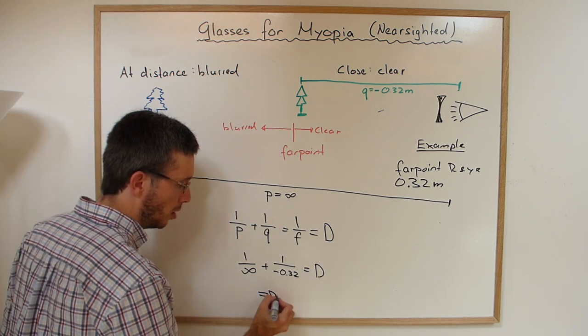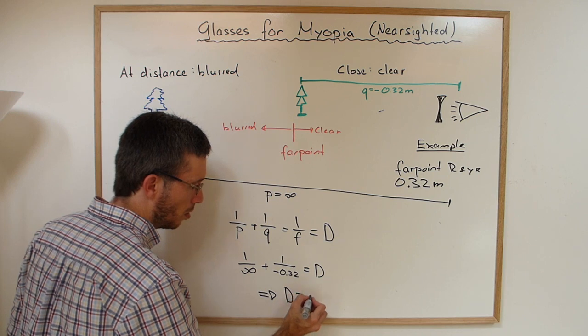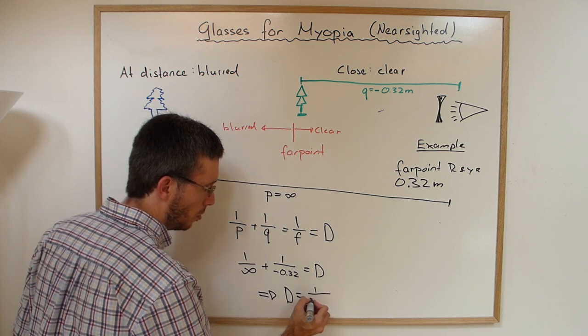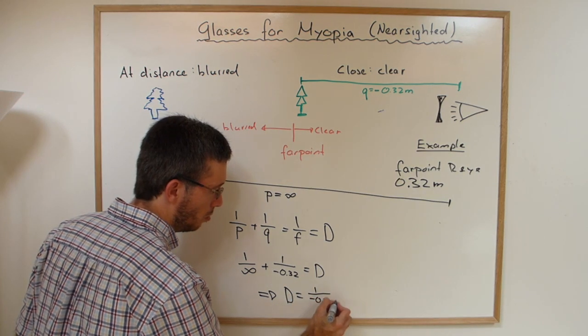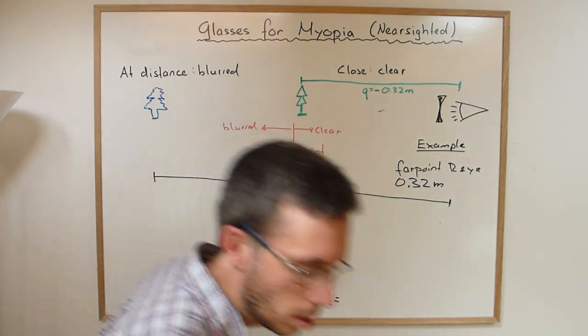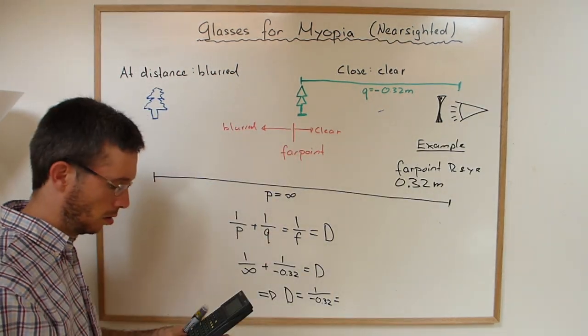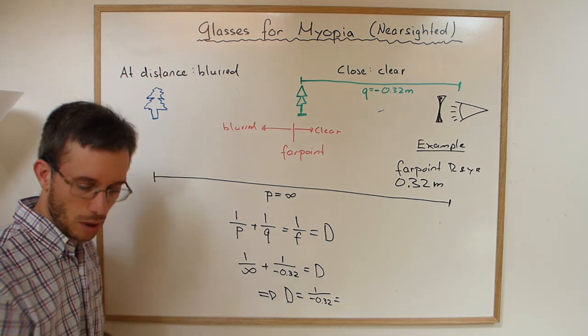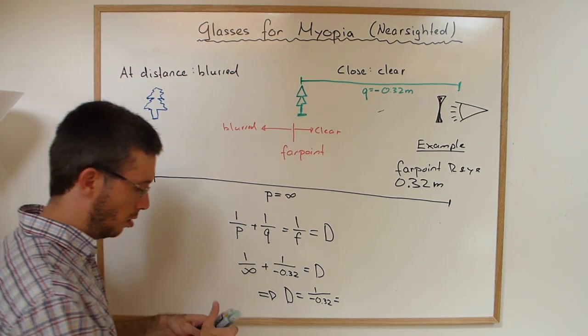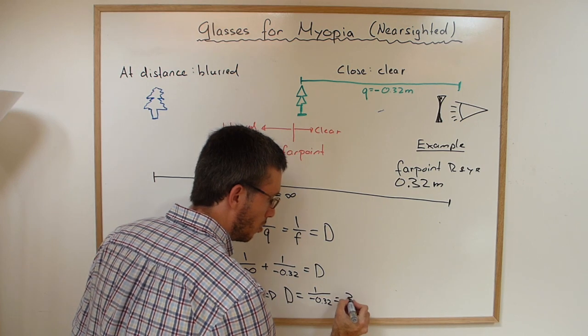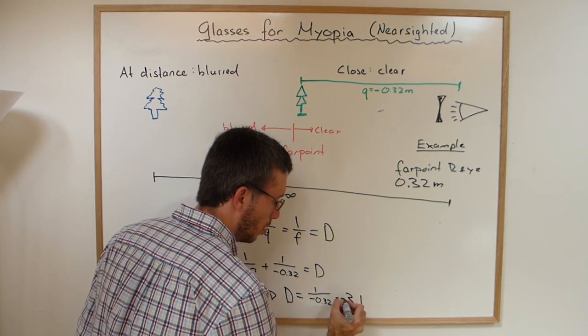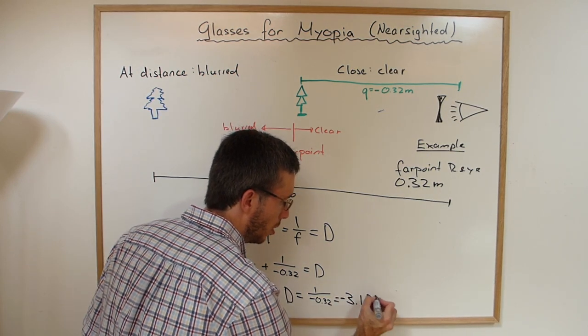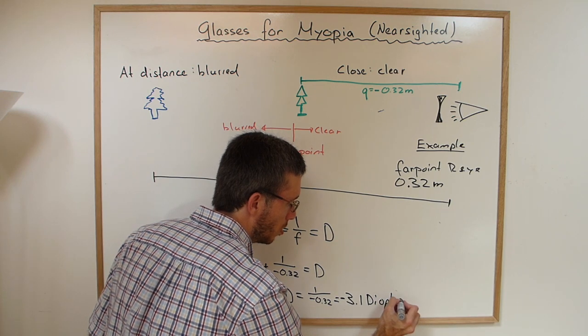So the diopters I need is 1 over minus 0.32, which is negative 3.1 diopters.